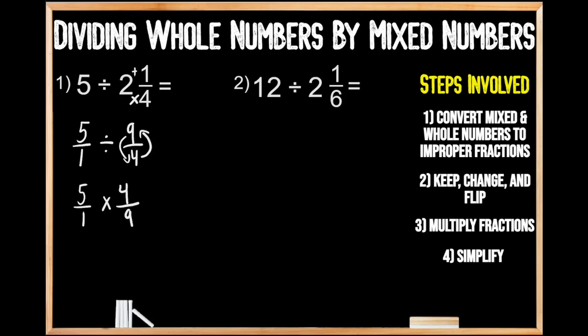Now we're going to move on to step number three, where we're going to multiply these fractions. Beginning with our numerators, when we multiply five times four, we get 20. And for denominators, when we multiply one times nine, we get nine.